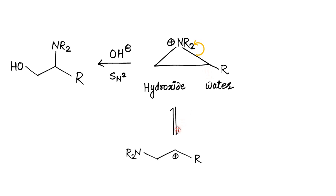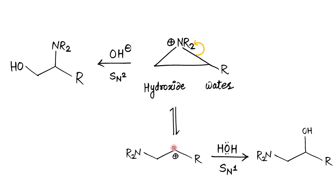Carbocation formation is the first step. In the second step, the water molecule acts as the nucleophile: the lone pair of water attacks the carbocation carbon, giving an OH substituent in the final product. So depending on whether the nucleophile is strong (like hydroxide ion, proceeding by SN2) or weak (like water, proceeding by SN1), the final product differs.